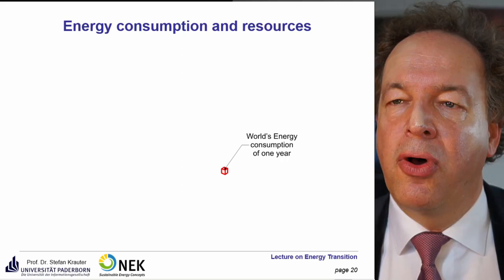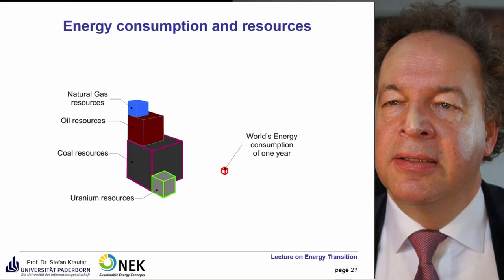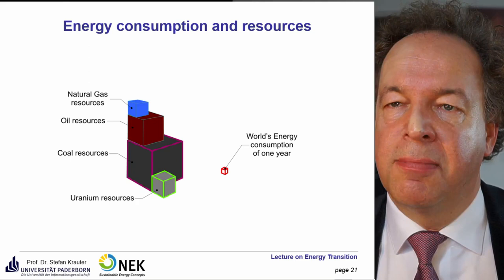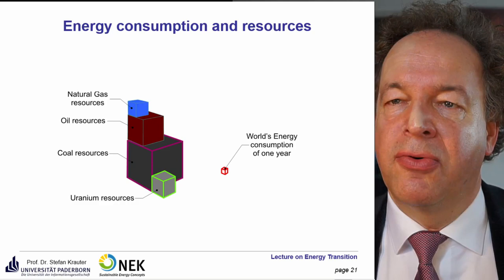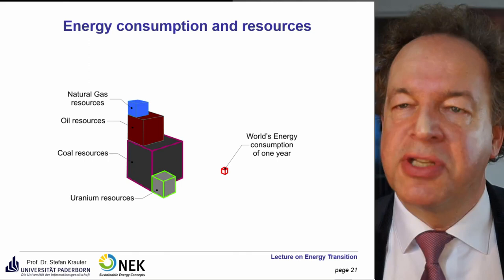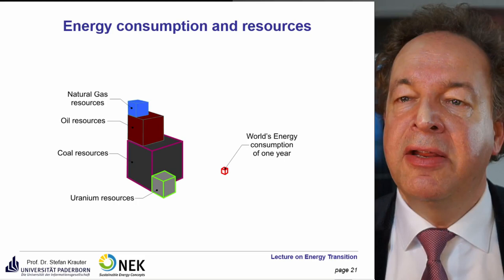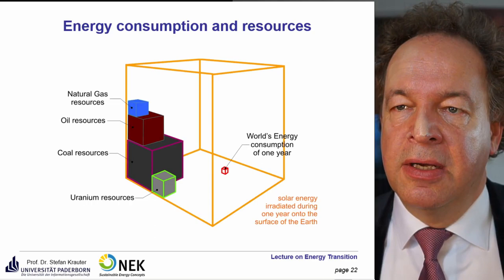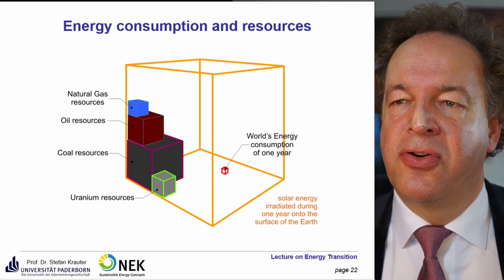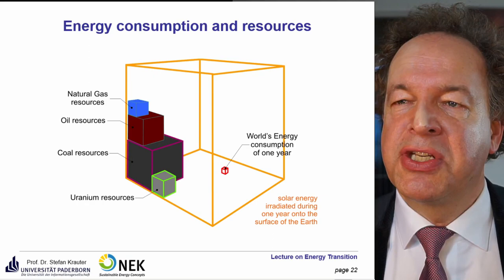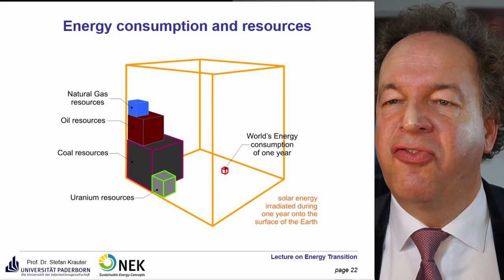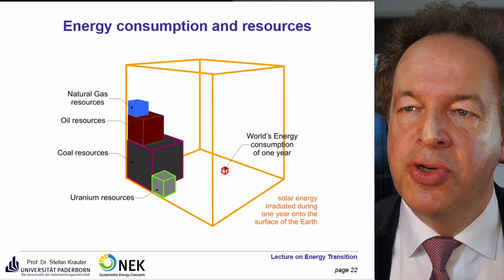Looking at world energy consumption versus resources: natural gas may last 20–40 years, oil a bit longer, coal even more, and uranium resources — if all primary energy depended on them — would be depleted in about 40 years. In contrast, solar energy hitting Earth's surface in one year is 14,500 times larger than the world's annual energy consumption — far exceeding all resources combined.